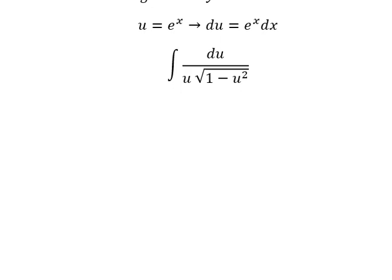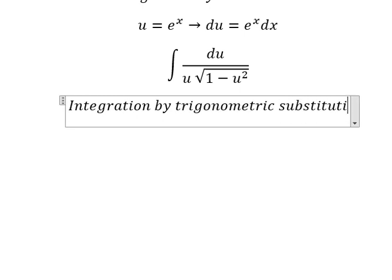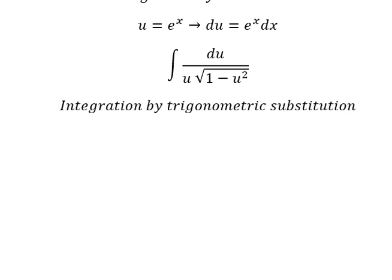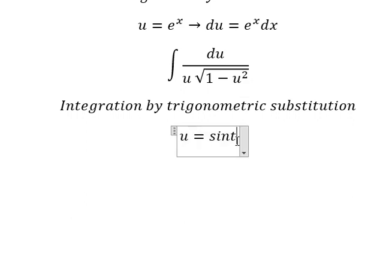Next, we need to use integration by trigonometric substitution, so I will put u equals to sin(t). If we substitute this in, we have 1 minus sin²(t), and 1 minus sin²(t) we change to cos²(t). Then we simplify the square root, and du equals cos(t) dt.